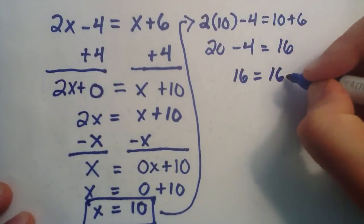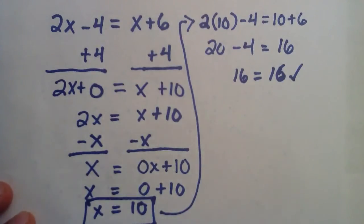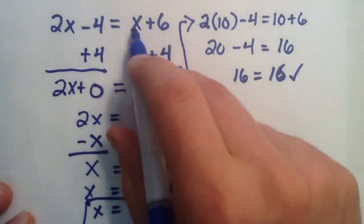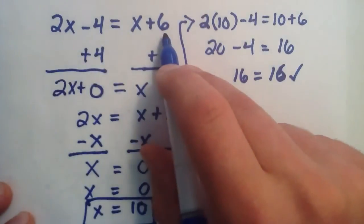So, once again, we have a statement that is true. 16 equals 16. So, because we got a true statement by plugging the 10 in where the x's were, that means that x equals 10 is the correct answer to this statement.